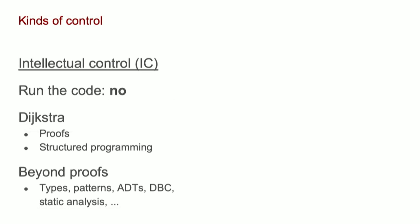I need to introduce the vocabulary of intellectual control here. The idea with intellectual control, as Dijkstra was talking about it, is: before you run the code, do you have good confidence it's going to do what you expect?